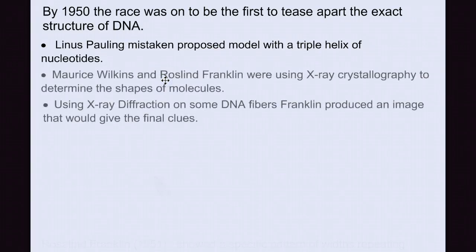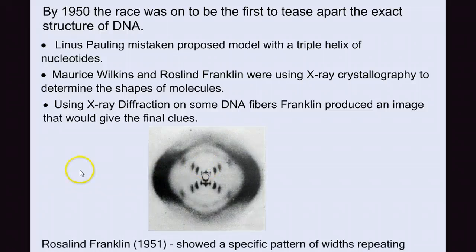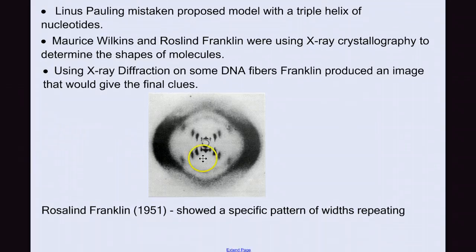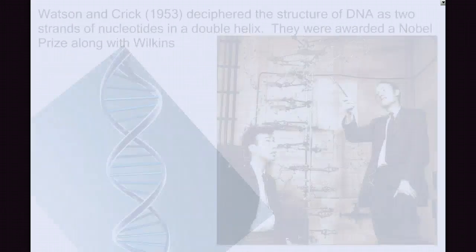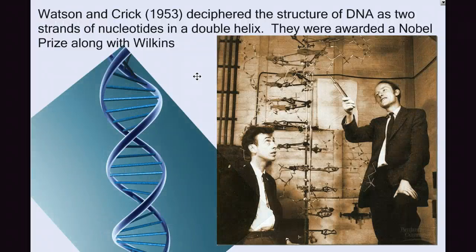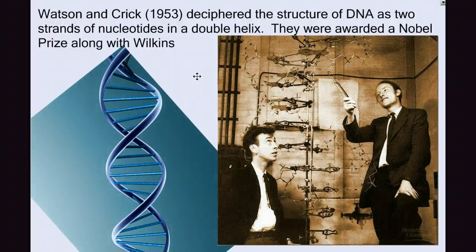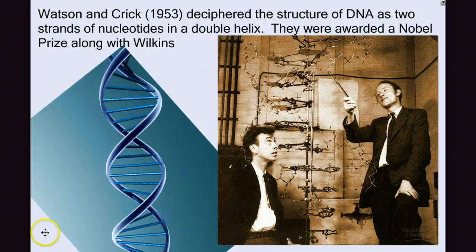About the same time, Maurice Wilkins and Rosalind Franklin were using X-ray crystallography to determine the shapes of complex molecules. And using X-ray diffraction on some DNA fibers, Franklin produced an image that would give the final clues. What's interesting was that Wilkins wasn't a big fan of Franklin, and while they shared a lab, Wilkins shared this picture with two other researchers, James Watson and Francis Crick. This picture was the last piece that they needed to kind of tease apart the puzzle of a model that they were pretty far along on. This picture gave them some ideas that showed a specific pattern of width repeating. And in 1953, Watson and Crick deciphered the structure of DNA as two strands of nucleotides in a double helix. And for this work, they were awarded the Nobel Prize along with Wilkins, and Rosalind Franklin was kind of left out in the cold.